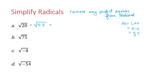Then we'll apply the square root to each factor: the square root of 4 times the square root of 5, which is 2 times the square root of 5.